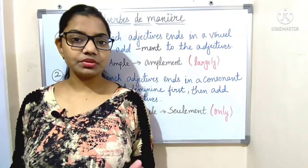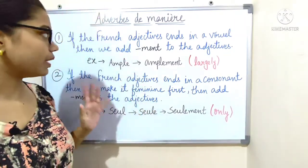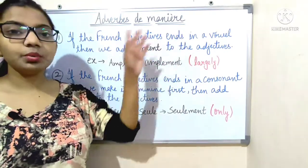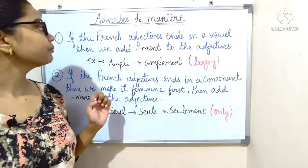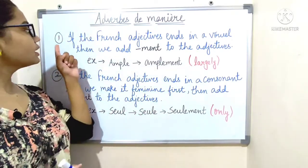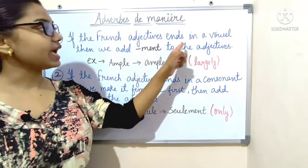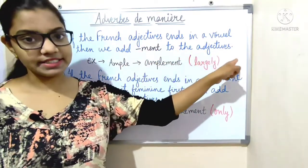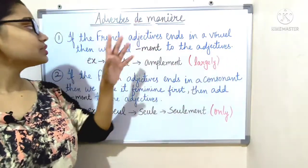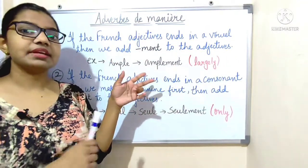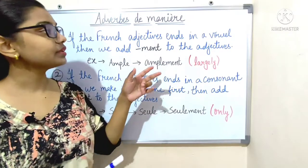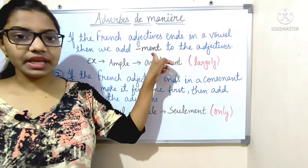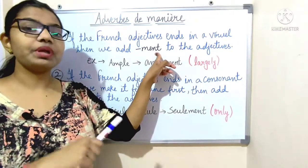Now we see the three rules to make an adverb of manner. Rule number one: if the French adjective ends in a vowel, then we directly add '-ment' (M-E-N-T) to that adjective to make an adverb.